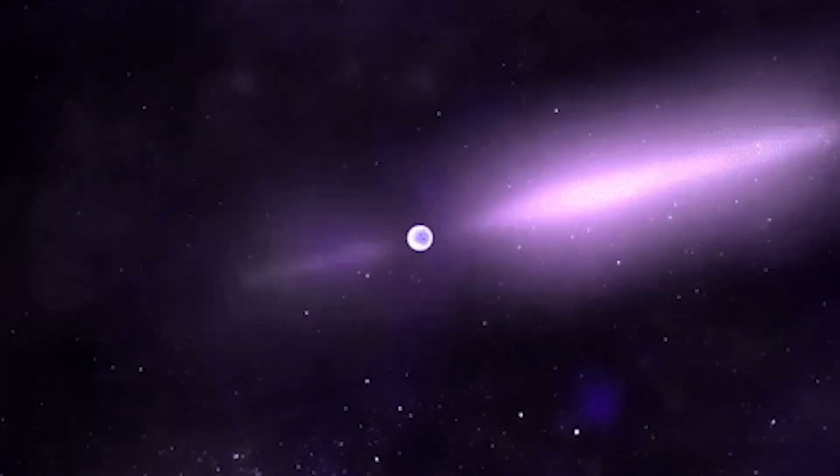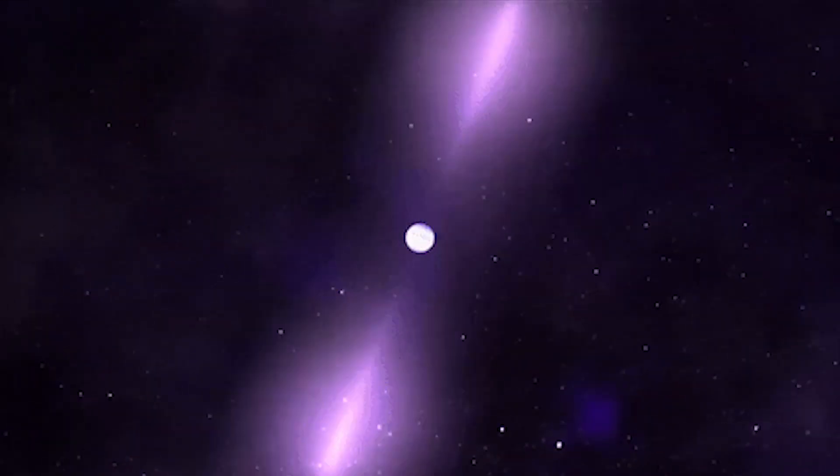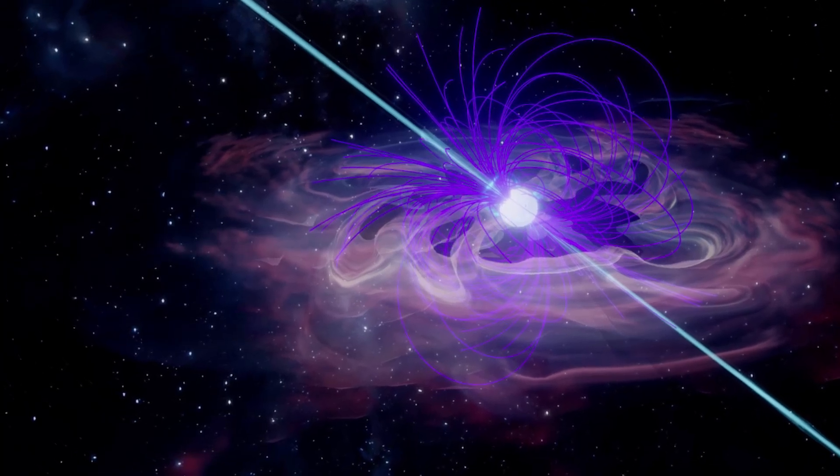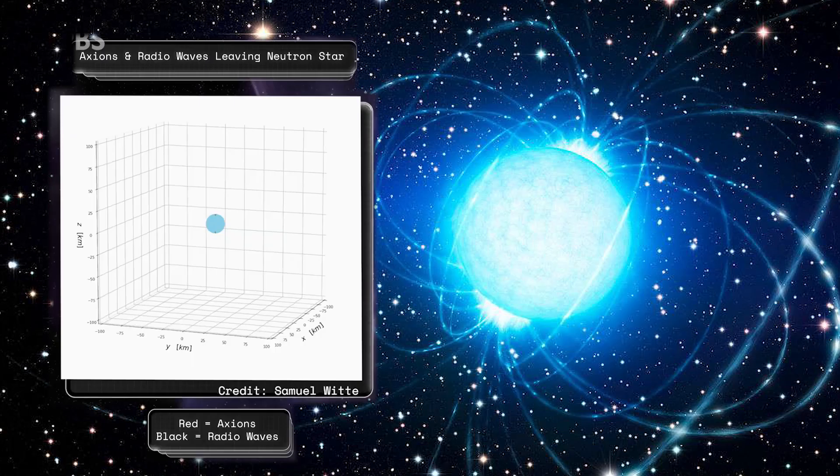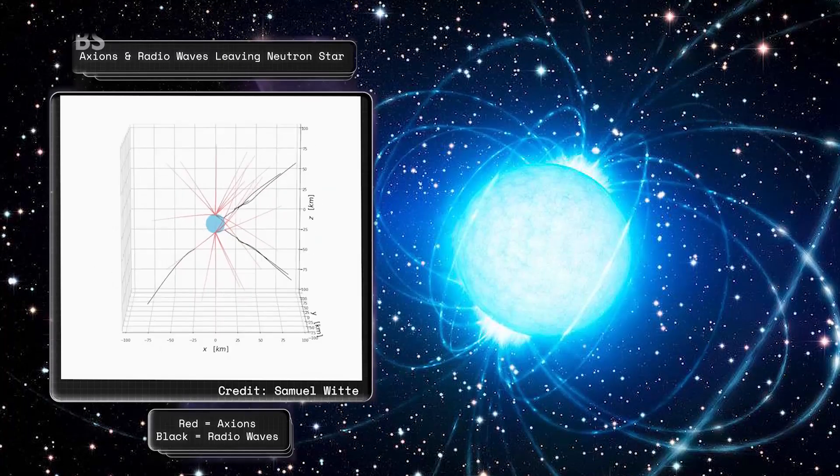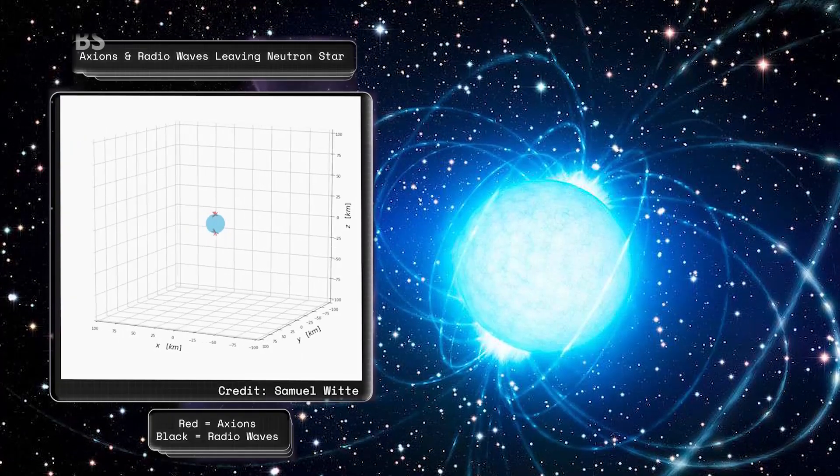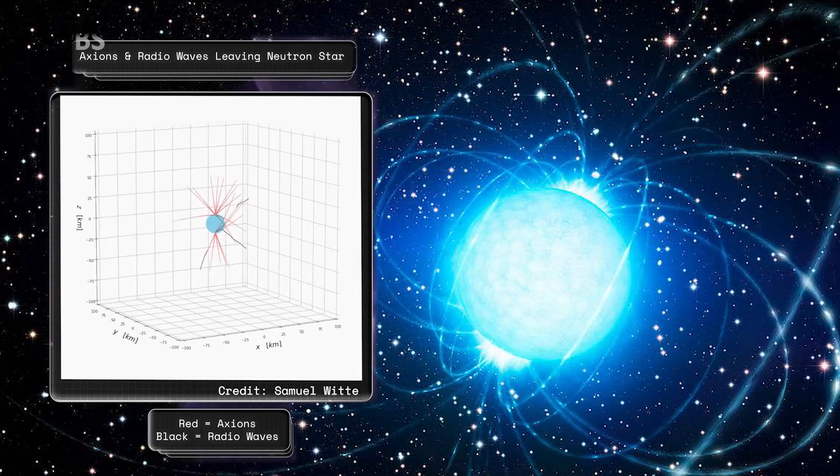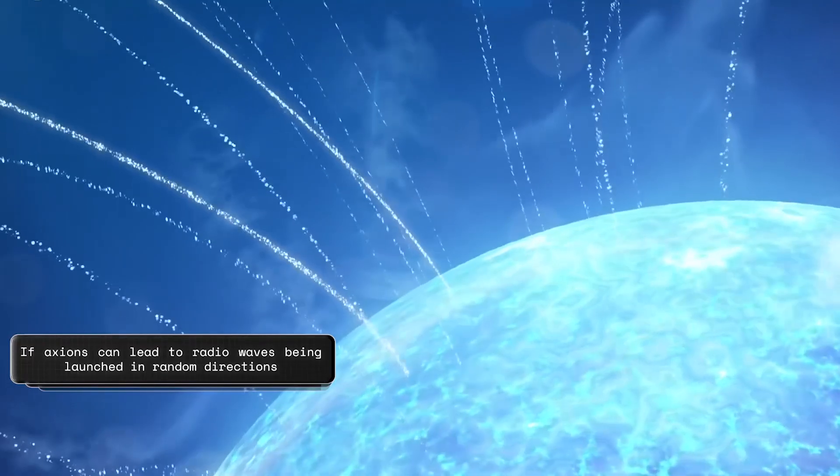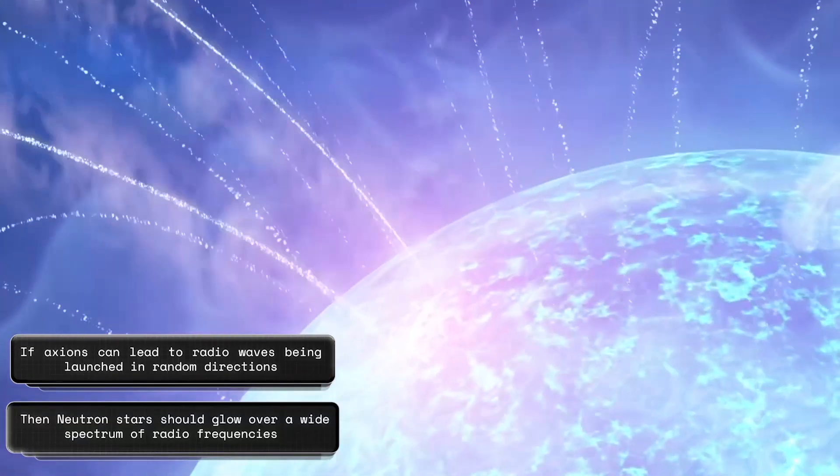However, once generated, the radio photons and axions follow markedly different paths. Radio waves are strongly beamed. They swivel with the magnetic poles in narrow cones, leading to the pulsations that we observe when the beam sweeps across our line of sight. Axions, by contrast, can shoot off in all directions. They convert back to radio waves in some cases, in directions way off the standard pulsar beam. This actually gets us to a prediction that might allow us to test for axion production. If axions can lead to radio waves being launched in random directions, not just with the standard pulsar beam, then we should expect neutron stars to glow over a wide spectrum of radio frequencies at all times.